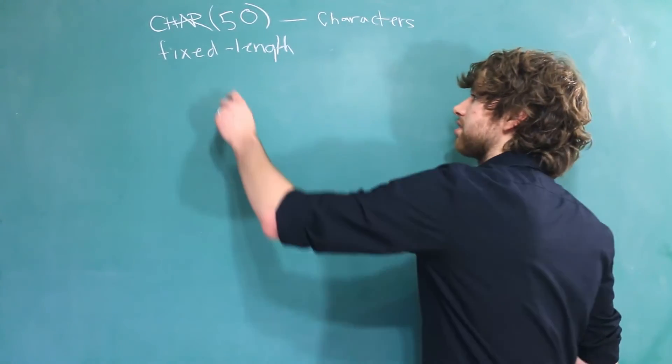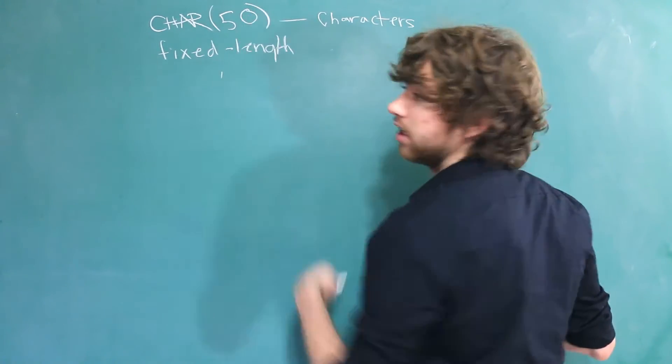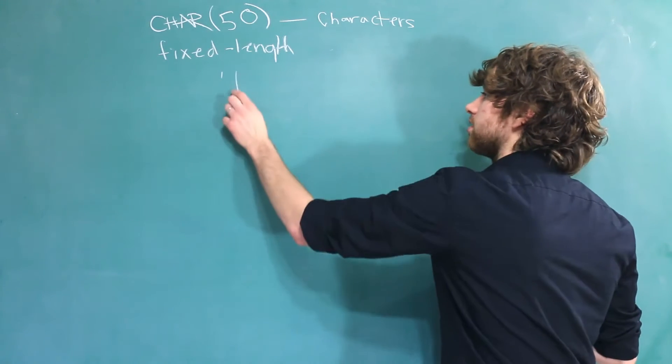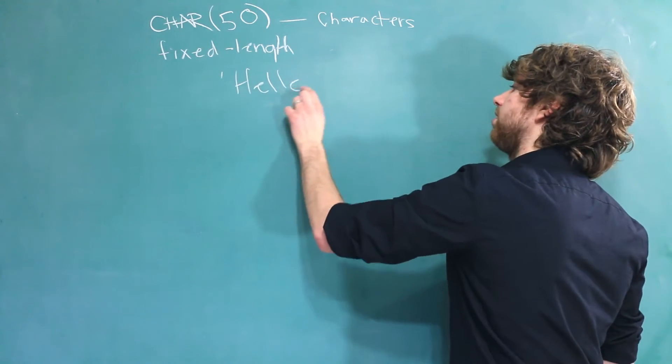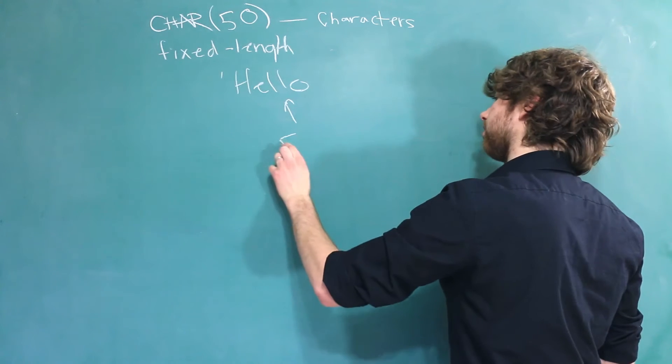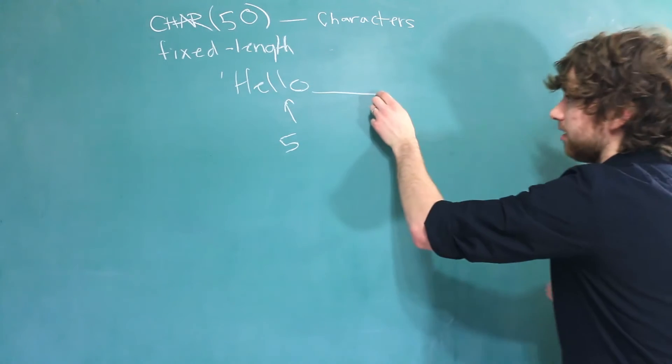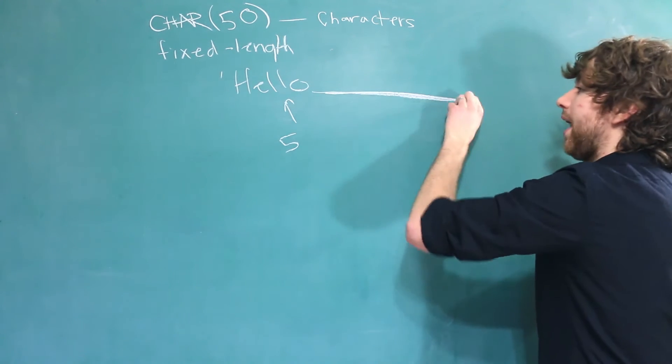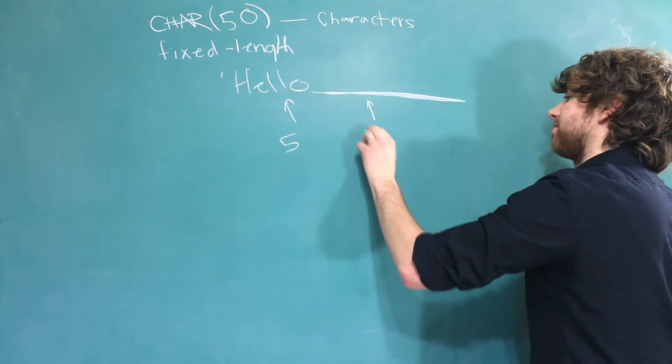When a column is a fixed length that means if you put something in shorter than that length, it's going to pad it with spaces. So something like hello only takes up 5 characters. But it's going to pad it with 45 spaces.